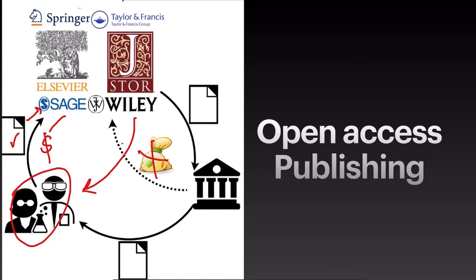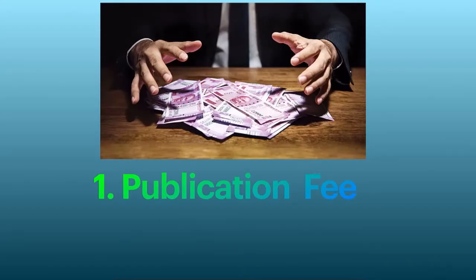Now, predatory journals function only for the money sent by the authors. They try to make money from the authors and totally compromise the quality of the journal, and to a larger extent those kinds of journals may not even exist. In this video I am going to mention 10 points which will help you identify predatory journals.